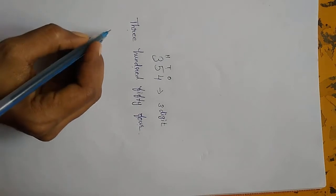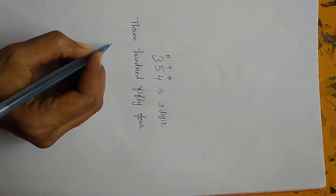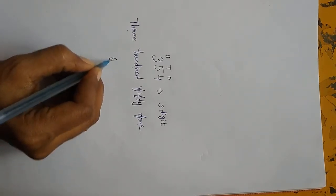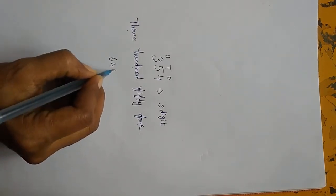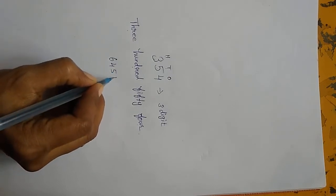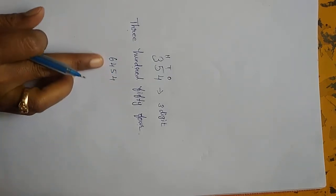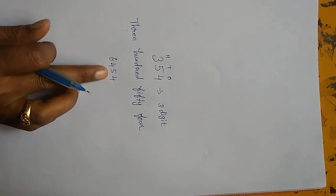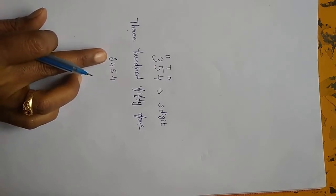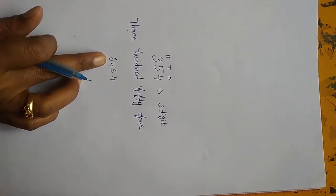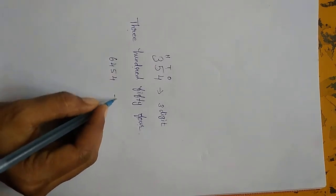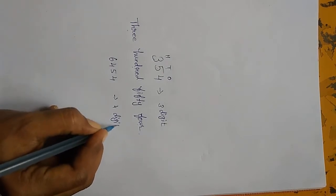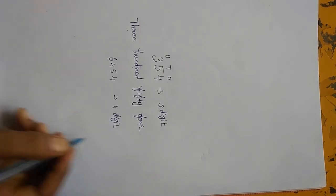I write one number — see the note. How many digits here? 1, 2, 3, 4. So this is a 4-digit number.